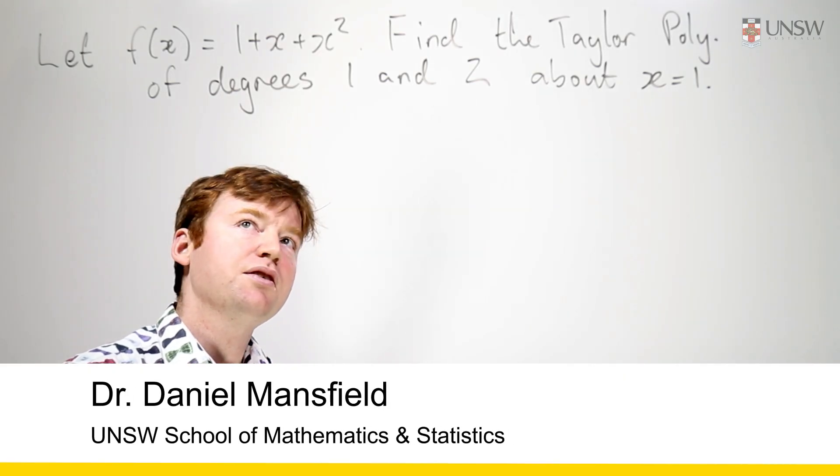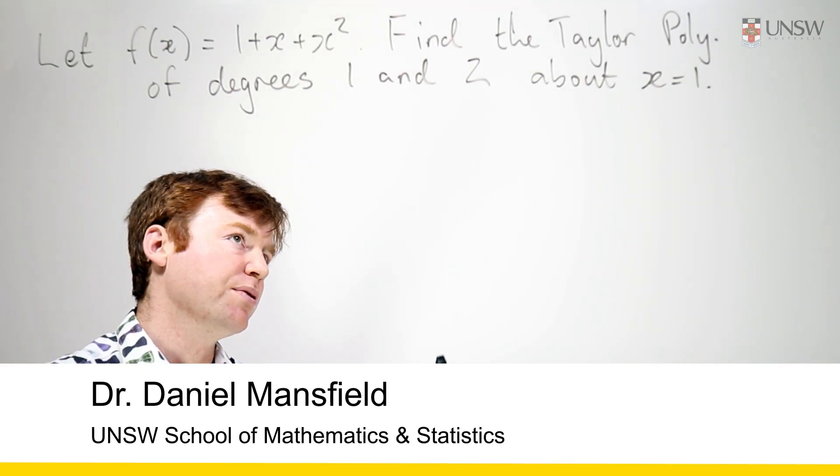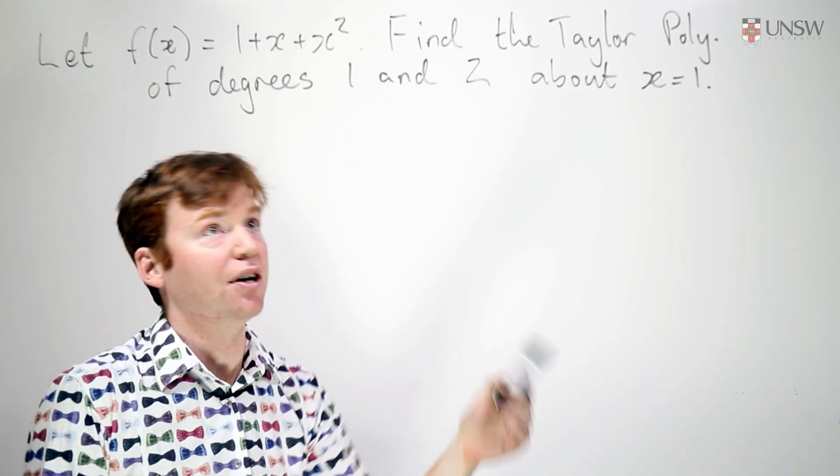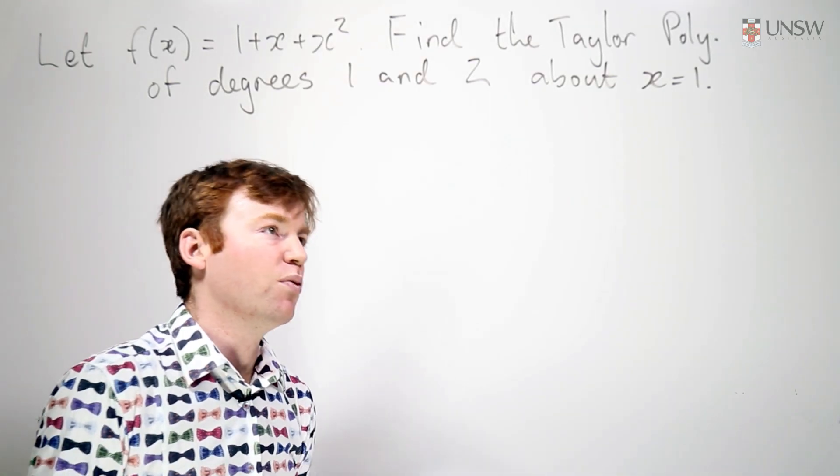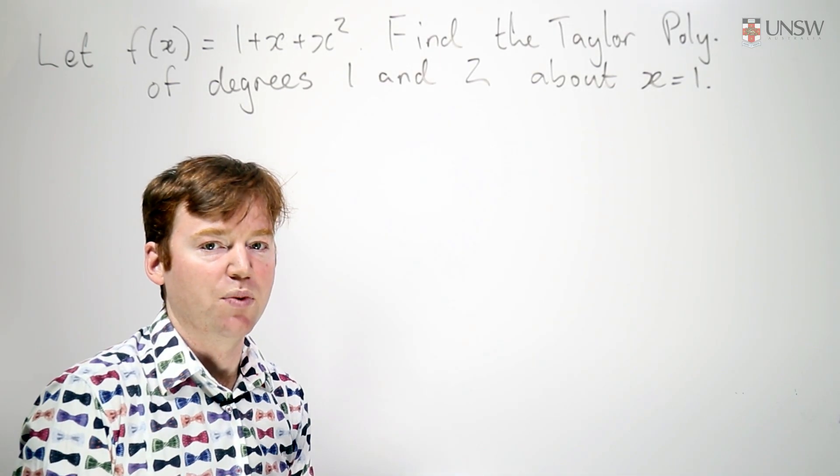Hello. In this question we're given a polynomial and asked to find the Taylor polynomial of degrees 1 and 2 about a point x equals 1.